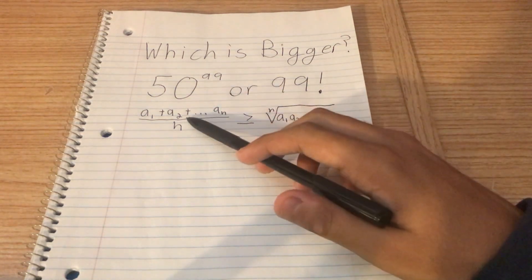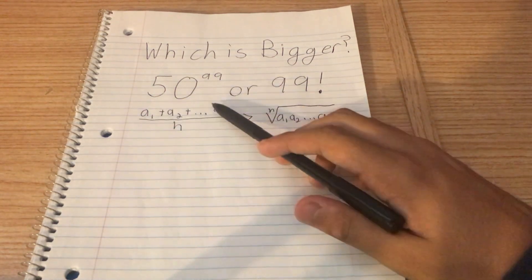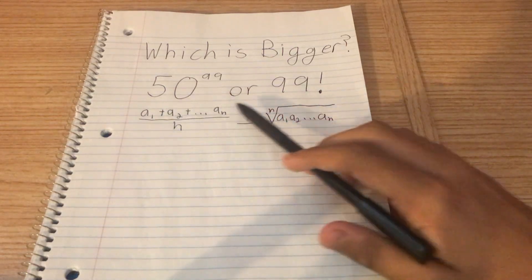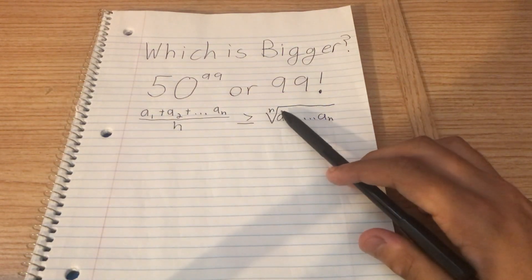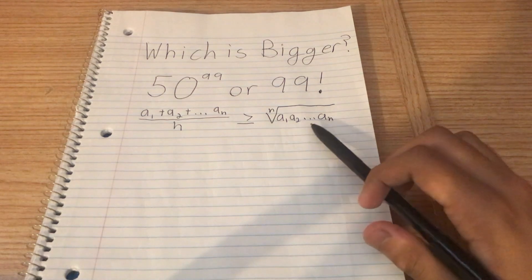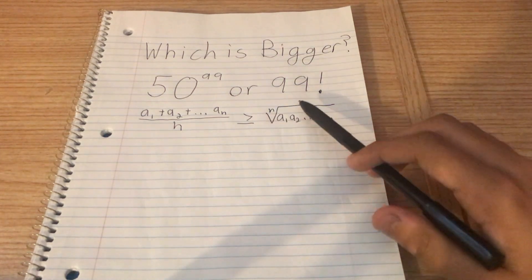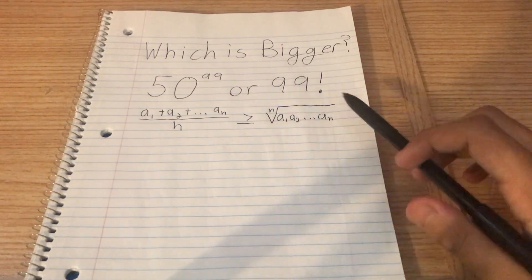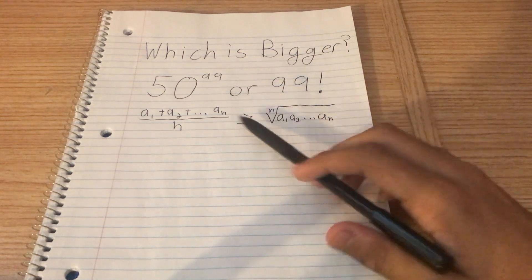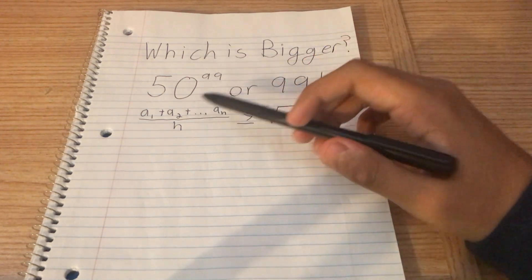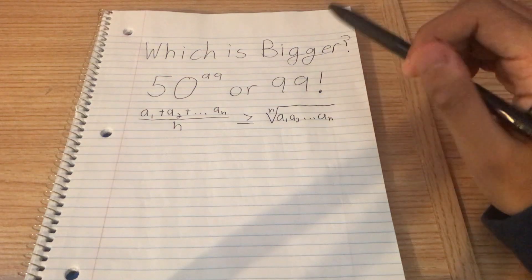The arithmetic mean is just the usual mean. You add them all up and then divide by the number of terms you have. And the geometric mean is when you multiply all of the terms, and then you take the nth root, depending on how many terms there are. And so this inequality is saying that the arithmetic is always greater than or equal to the geometric.